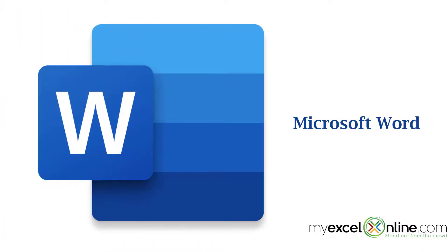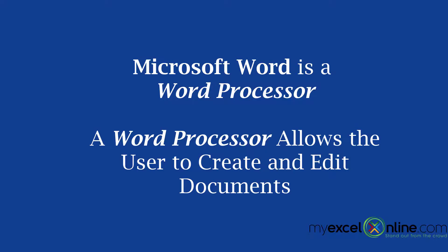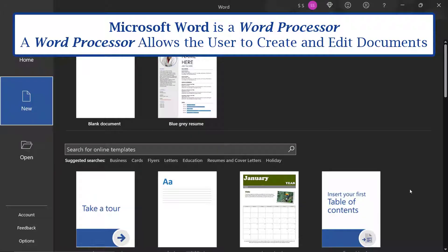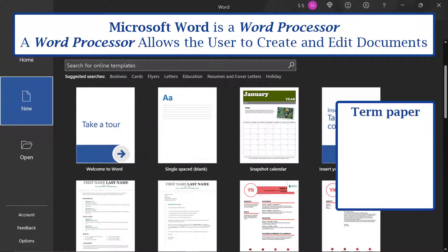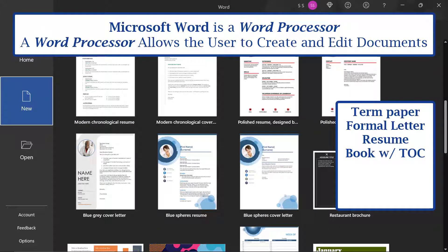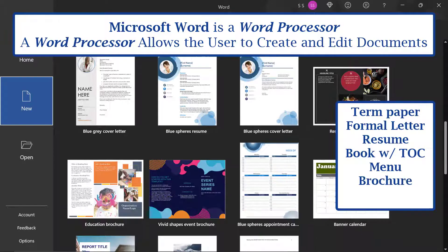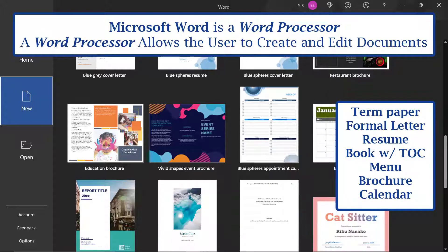So let's start with Microsoft Word. If you've never heard of Microsoft Word before, it is what is known as a word processor. A word processor allows you to type up a document, and this could be any kind of document. Looking at the different templates available in Word, you can see that different documents include term papers, letters, any kind of document you would write to someone, a formal letter, maybe a resume, even a book with a table of contents, a menu, a brochure, a calendar, et cetera.